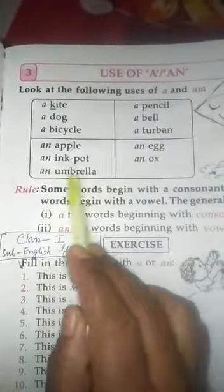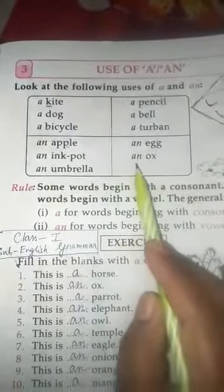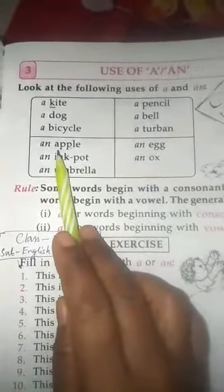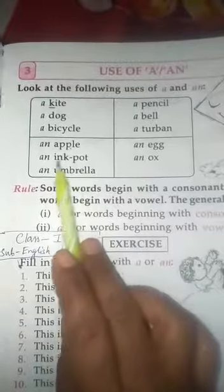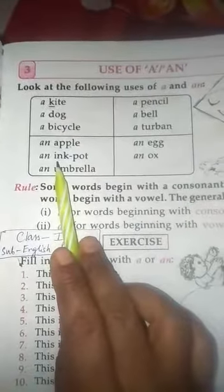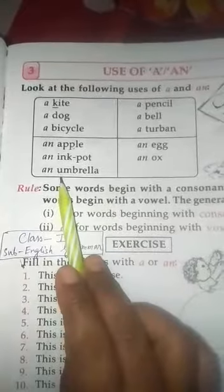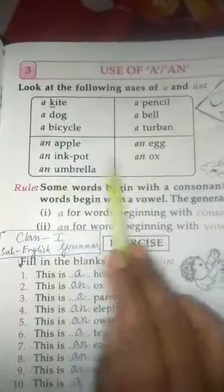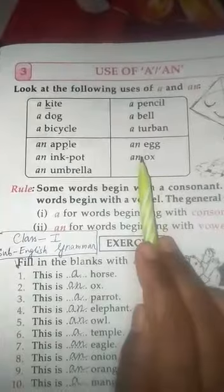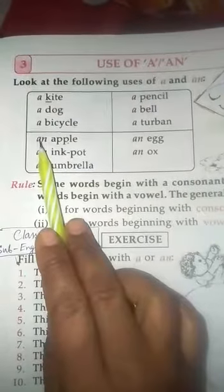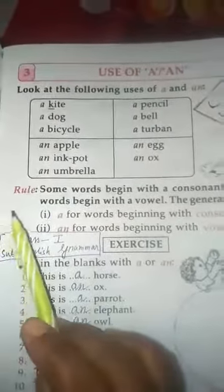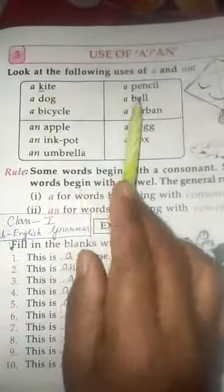And see here: an apple, an ink pot, an umbrella, an egg, an ox. Because apple starts with a, a is vowel. Ink pot, i is vowel. Umbrella starts with u, so u is vowel. An egg, e is vowel. An ox, o is also a vowel. That's why here an is used.